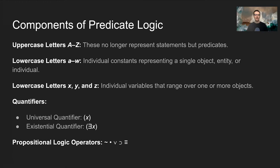Here are the components of predicate logic. Predicate logic uses uppercase letters A through Z, but in predicate logic, capital uppercase letters don't represent statements — they represent predicates. We're also going to introduce lowercase letters, and we have two types. Lowercase letters A through W are individual constants representing a single object, entity, or individual. Lowercase letters X, Y, or Z are variables that stand for one or more objects that range over a certain domain.